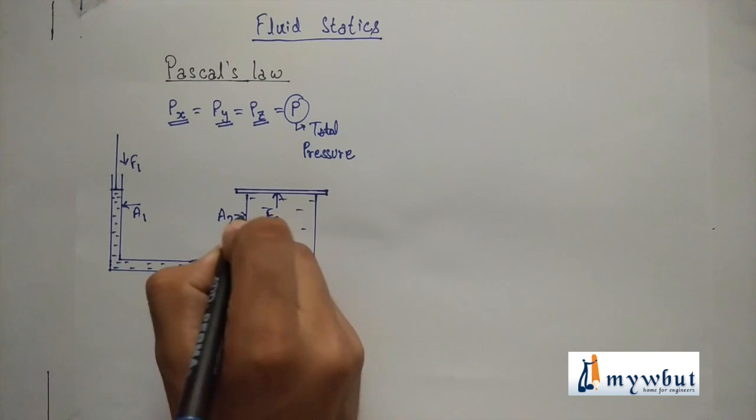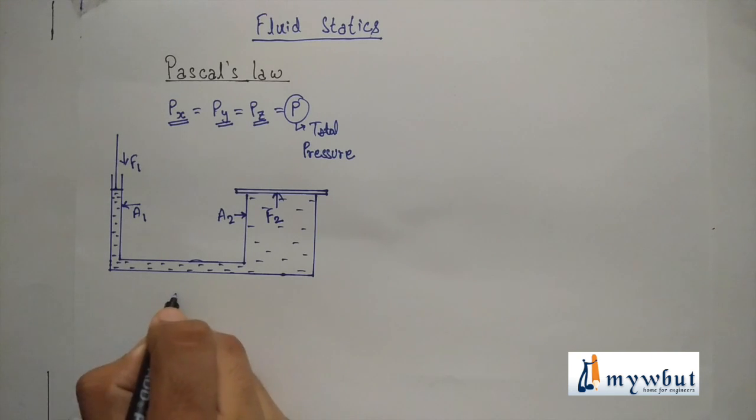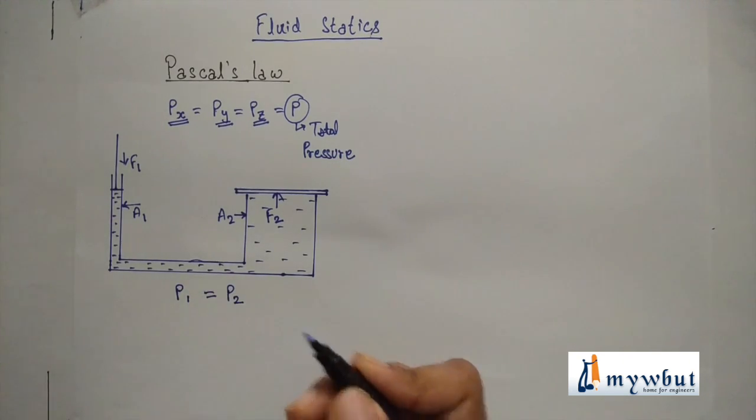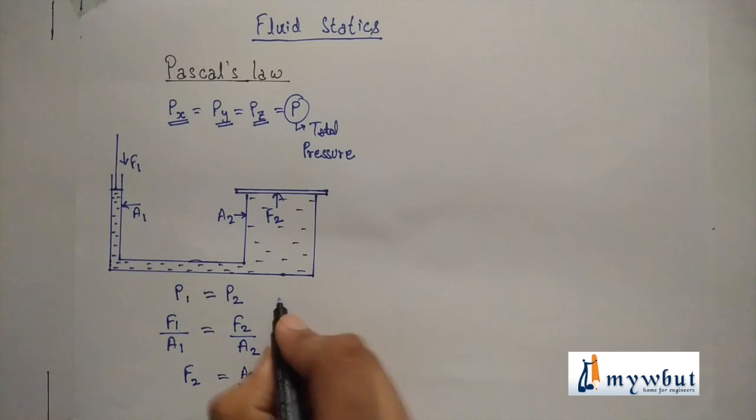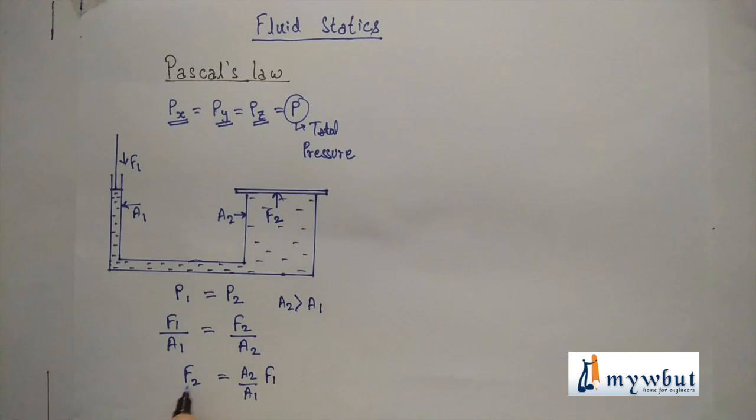then by Pascal's law we know that P1 is close to P2. Now pressure is written as force by area, which is F1 by A1 is close to F2 by A2. So the lifting force F2 will be A2 by A1 into F1.